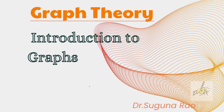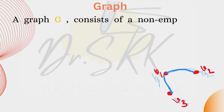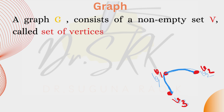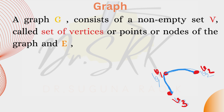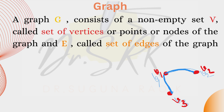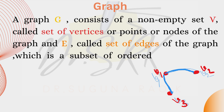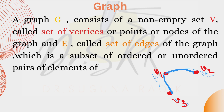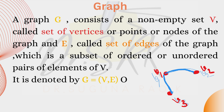Graph theory: introduction to graphs. First of all, we are going to learn the definition of a graph. A graph G consists of a non-empty set V, where V is called the set of vertices — sometimes also known as points or nodes of the graph — and capital E is called the set of edges of the graph, which is a subset of ordered or unordered pairs of elements of V. It is denoted by G equals V comma E, or sometimes simply as V.